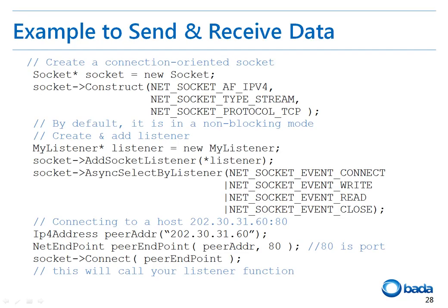The procedures to create and construct a socket are the same as those for blocking mode. However, the code to set blocking mode is not required, and a listener object is created and added, unlike for blocking mode. Then the sample code shows the procedures to specify the cases for which the operation is to be asynchronously performed using the listener object. Making a connection, writing, reading, and closing options are specified to be asynchronously performed. Like in blocking mode, the endpoint information is created with the IP address and the port number, and then the connection is established.